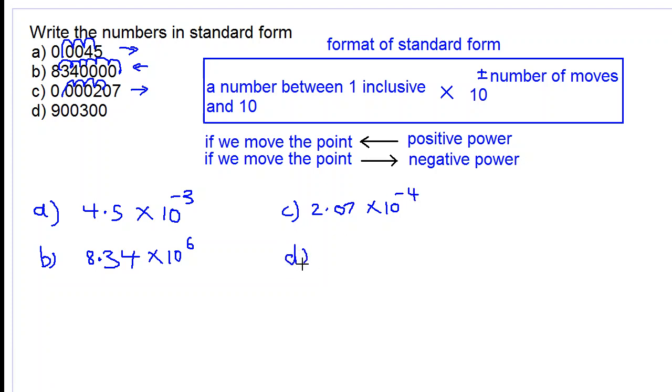Part D. Let's locate the point. The point is always located here in a whole number. We move the point until we get a number between 1 and 10. Now 9,003 is too big, so we have to keep going. 900 is too big. 90 is too big. Now we have 9.003, which is our number between 1 and 10.